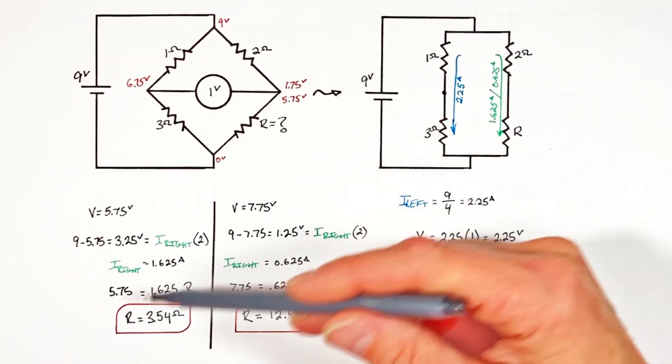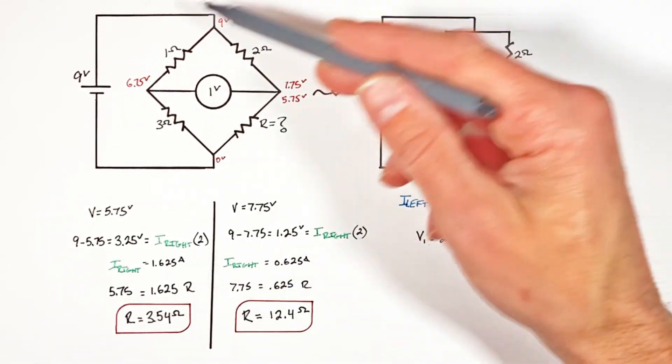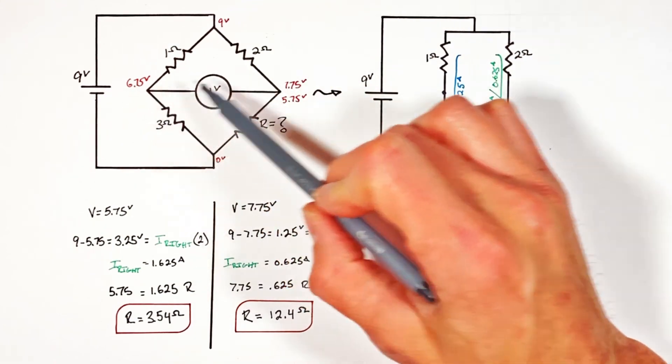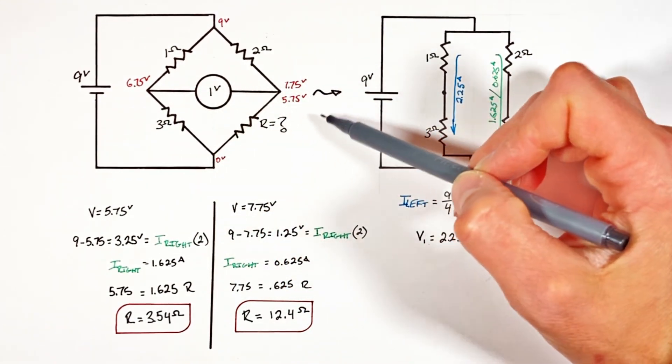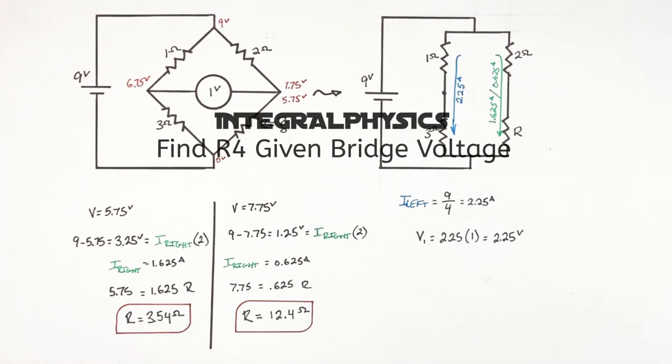So this is how you solve for the value of an unknown resistor in a Wheatstone bridge that has a given voltage across the bridge. And on that note that's all for now.